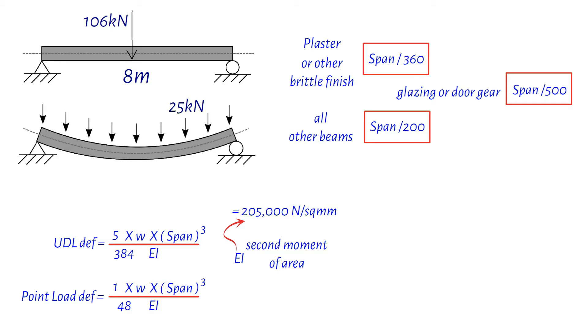The beam's dimensions are 457 x 191 x 82 kilograms per meter, and its second moment of area I is 37,100 centimeters to the power of 4.